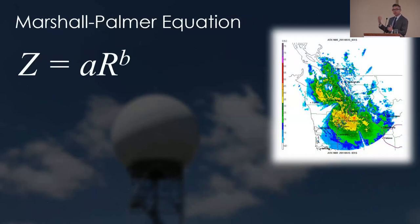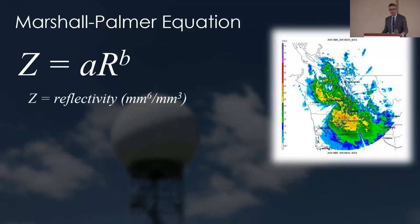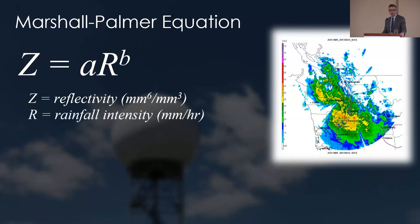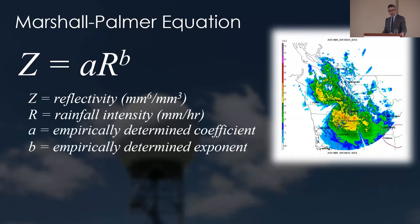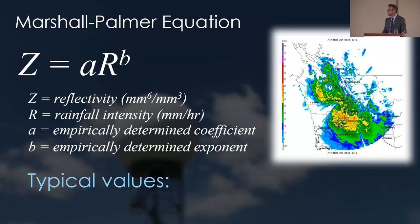To convert reflectivity into rainfall values, we use the Marshall-Palmer equation: Z equals A times R to the power B, where Z is reflectivity from the radar data and R is rainfall intensity in millimeters per hour. A and B are empirically determined values. Typical values are A equal to 200 and B equal to 1.6. These are very commonly used values, and with this equation we can generate estimates of rainfall based on radar.